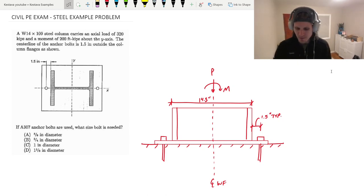A W14 by 109 steel column carries an axial load of 320 kips and a moment of 200 foot kips about the y-axis. The centerline of the anchor bolts is 1.5 inches outside the column flanges as shown. They give us a nice little plan view of our base plate and our column, our wide flange column.